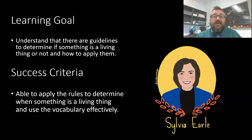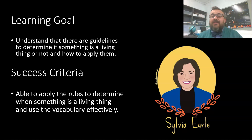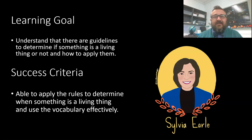Our learning goal here is for you to be able to work out that there are guidelines — criteria — before we say something's alive. That can get a bit tricky when we talk about things like viruses, and also how to apply those criteria. If you can apply those rules and use our vocabulary effectively, you've had success with this lesson.